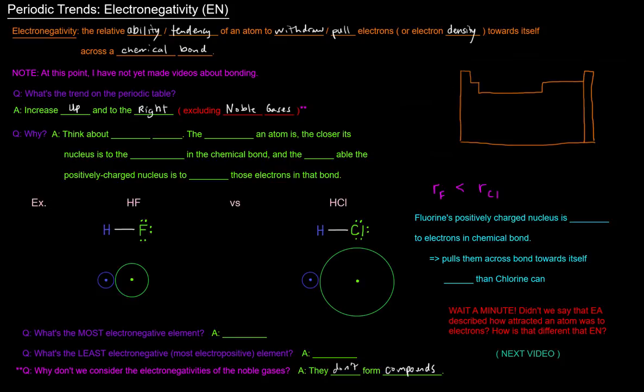But the question is, why is it that that ability increases up and to the right on the periodic table? Let's reveal this, so we have a visual. And of course, we're excluding the noble gases. But yeah, why is that?